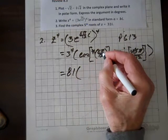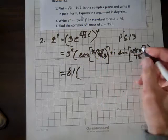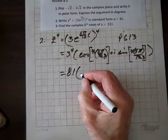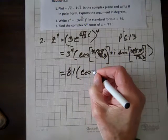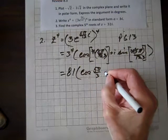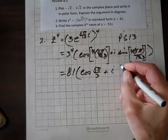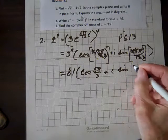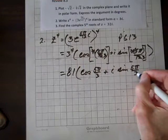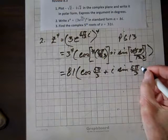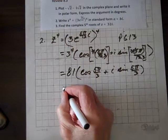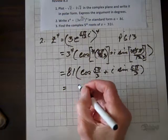And keep in mind, the 4 goes into 12 three times. So we have the cosine of 5 pi over 3 plus i sine 5 pi over 3. And that equals 81.